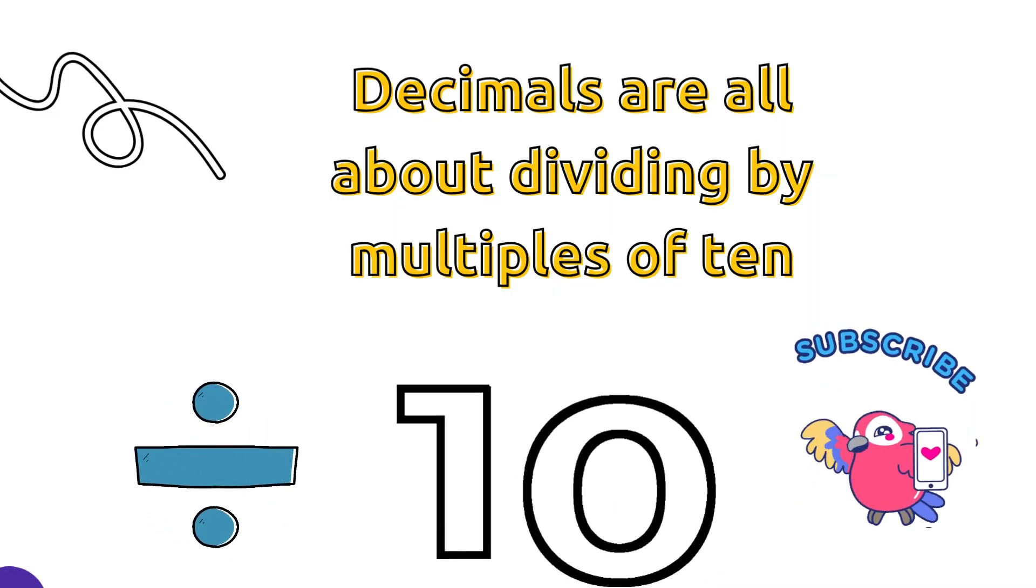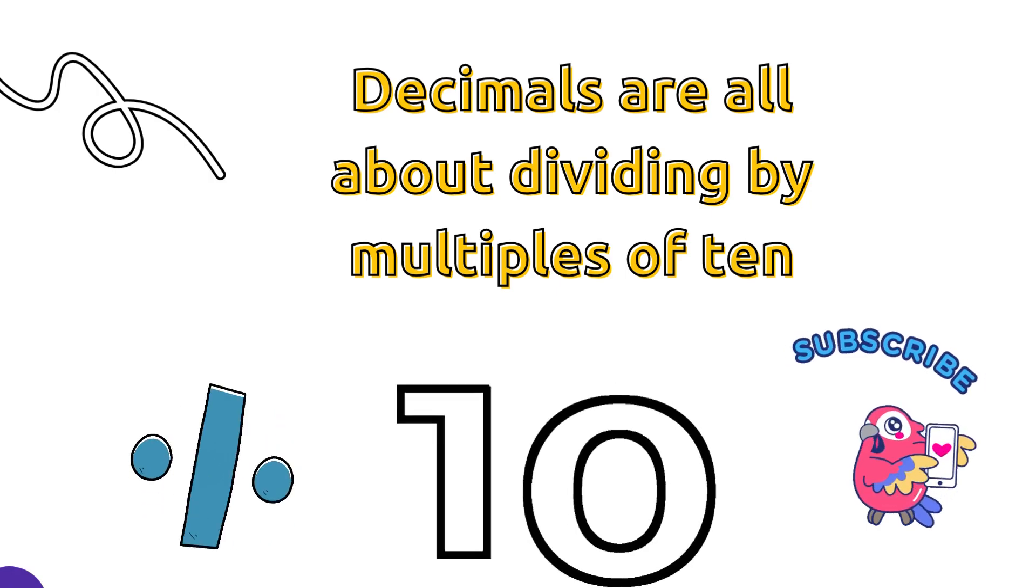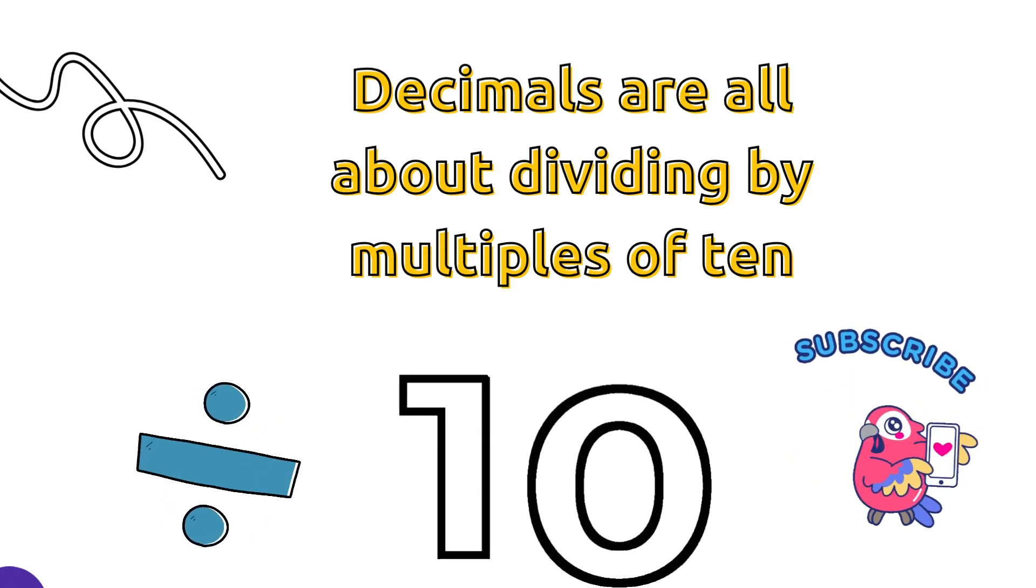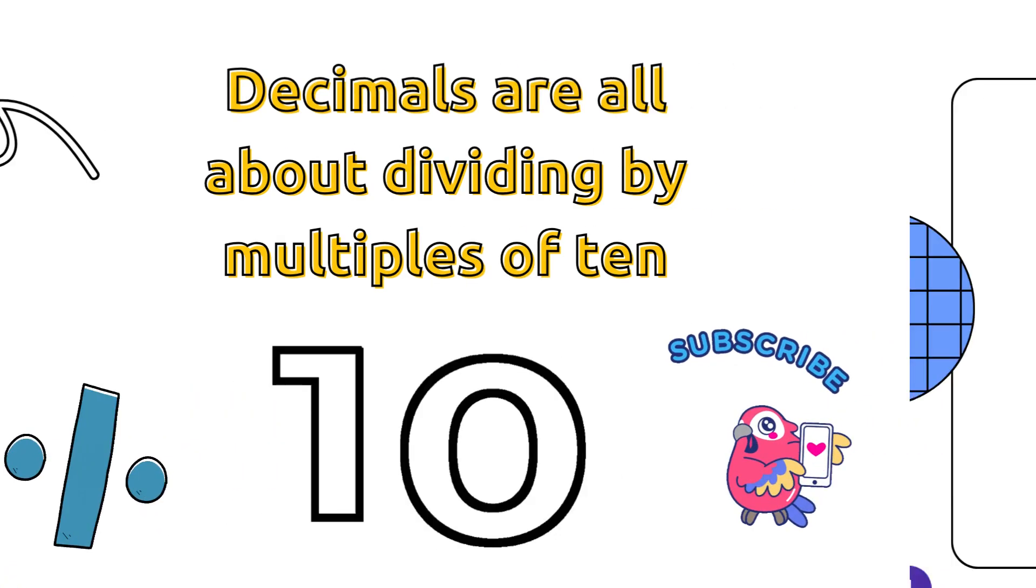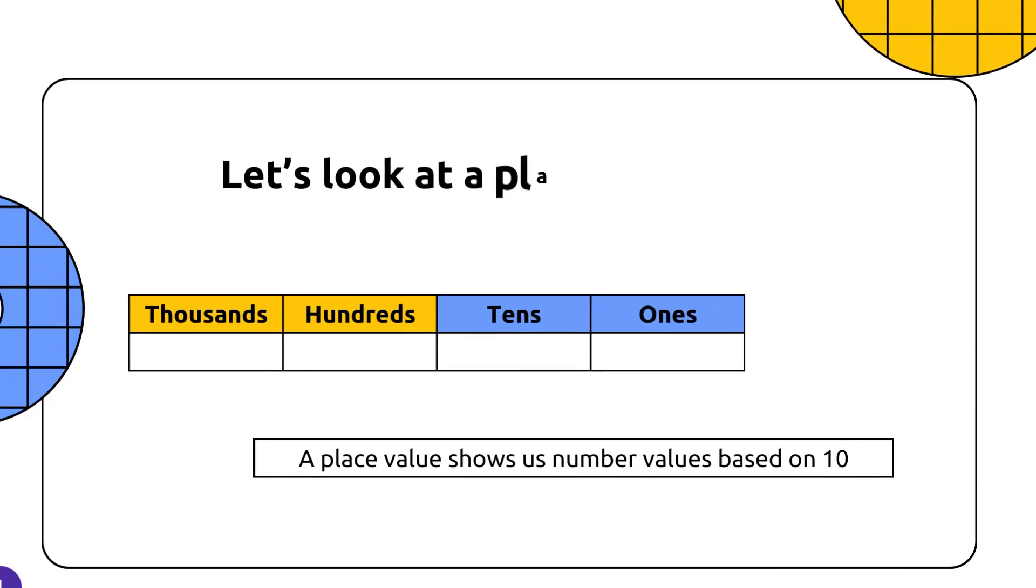Decimals are all about dividing by multiples of 10 and today we use a place value chart to explore decimals. A place value chart shows us number values based on tens.